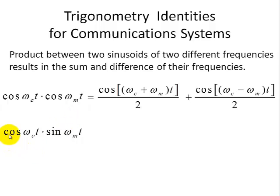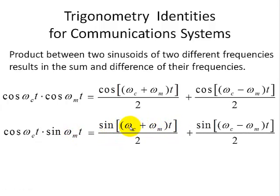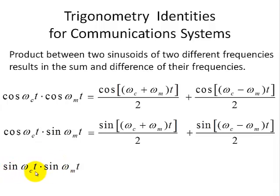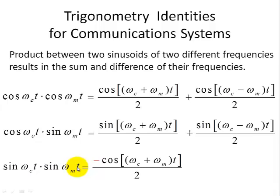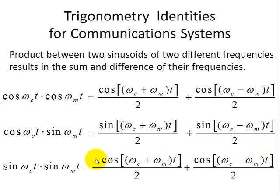Here we have a cosine for the carrier and then a sine for the message. However, it results in two sum and difference frequencies, but this time we have a sine here and a sine here. Then finally, this combination is that when we multiply two sines together — one associated with the carrier and the other associated with the message — we get the sum and difference frequencies. Here is the sum and here is the difference, and note we have a minus sign.